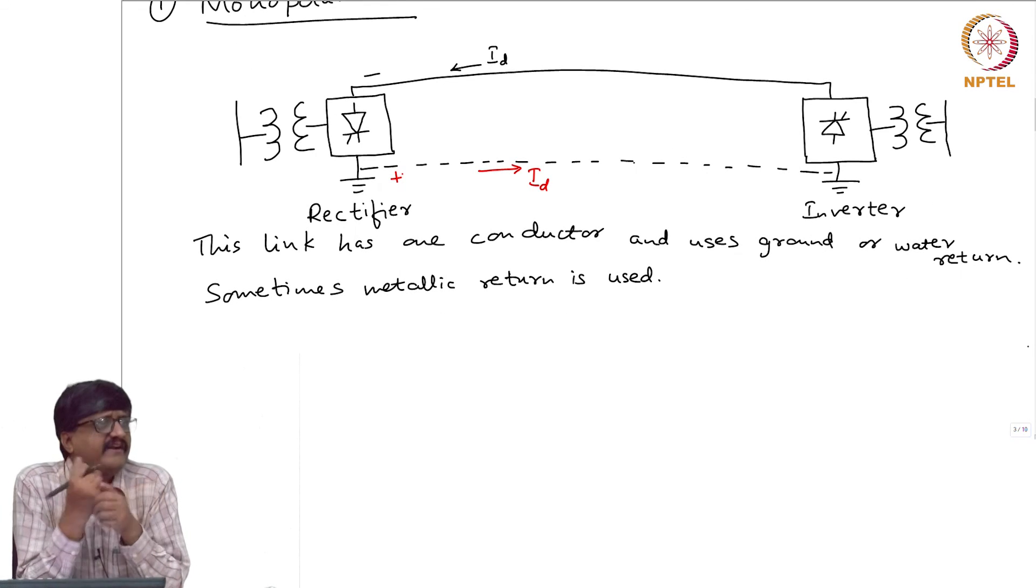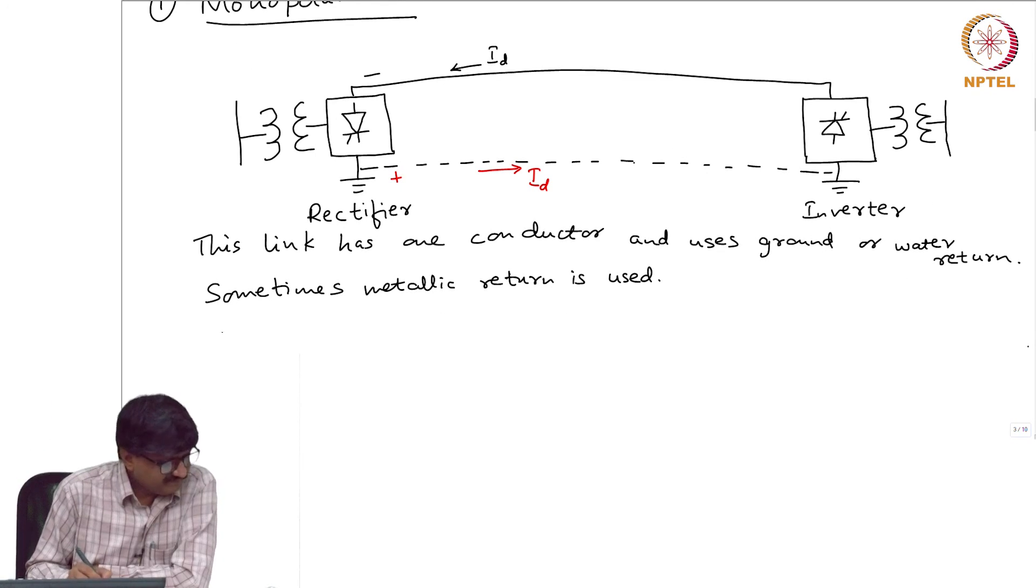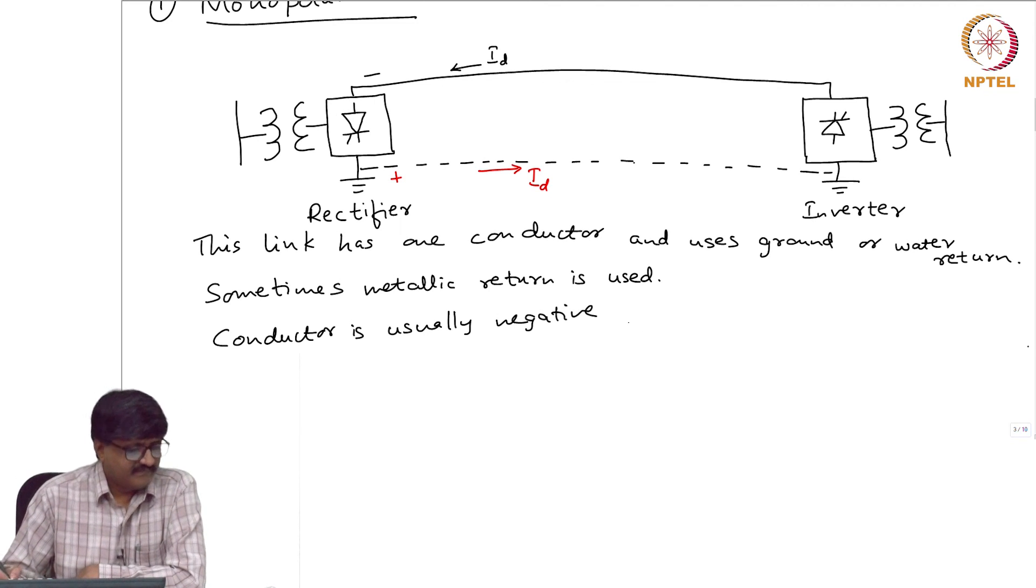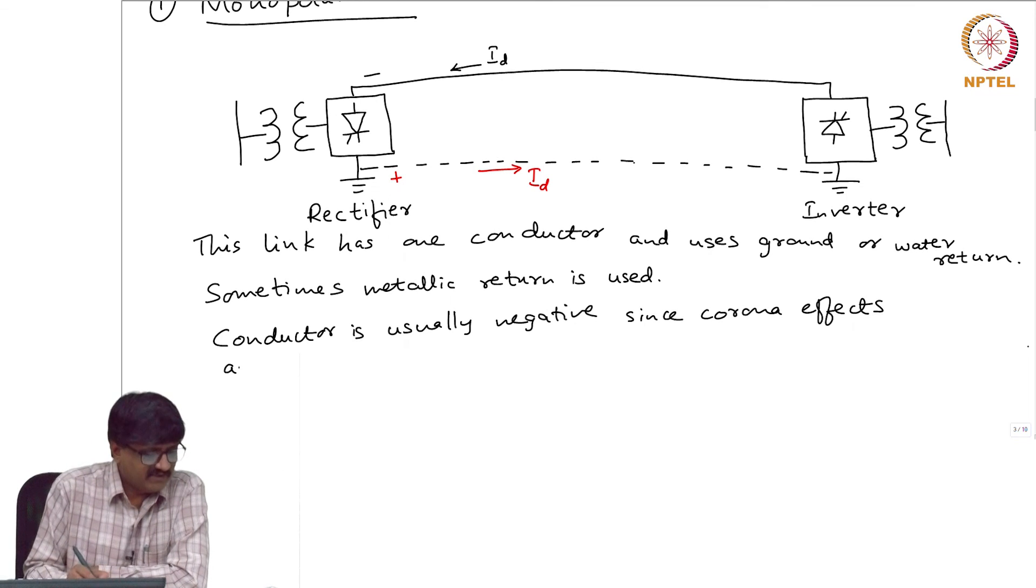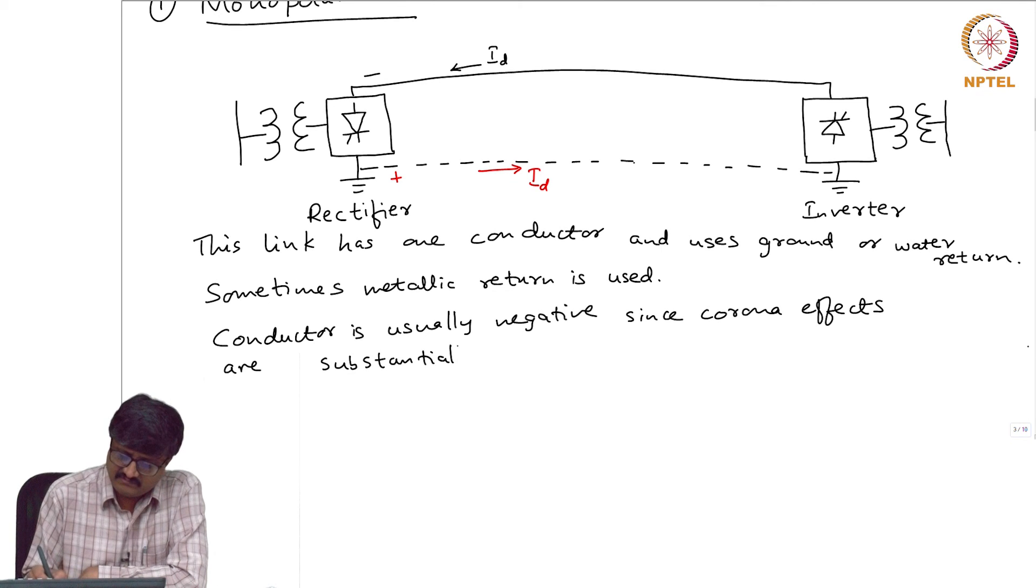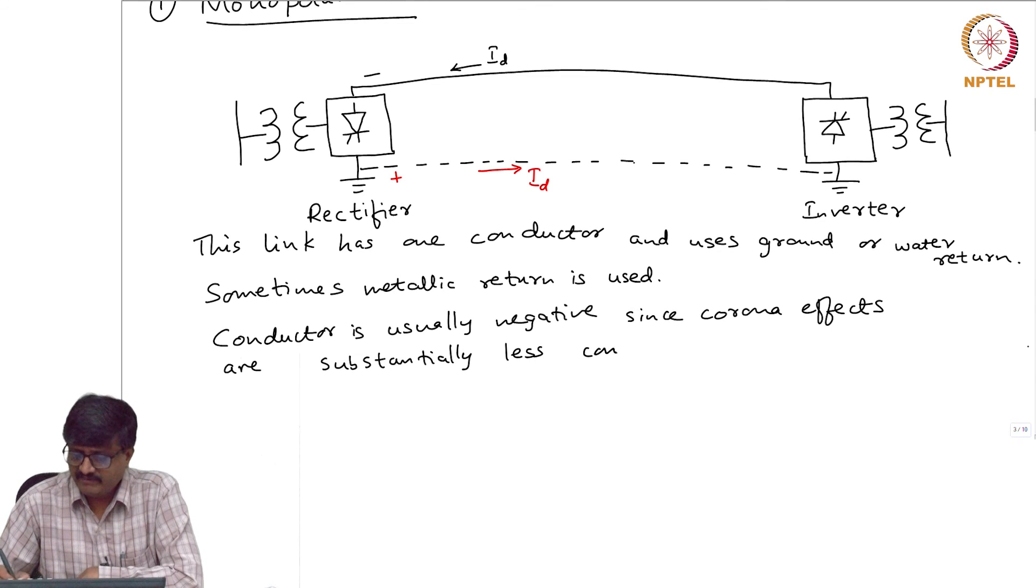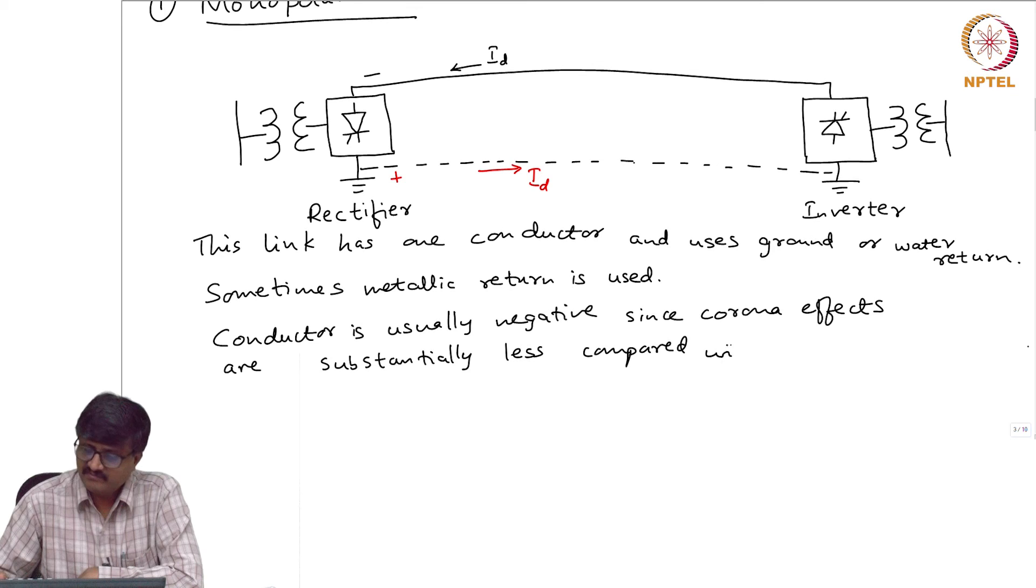The question is why not make conductor positive and ground negative? Conductor is usually negative. Since corona effects are substantially less compared with positive polarity, the conductor is usually negative.